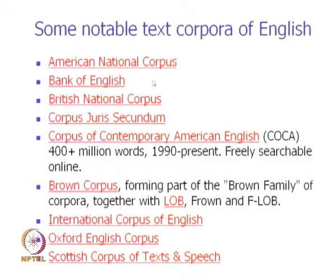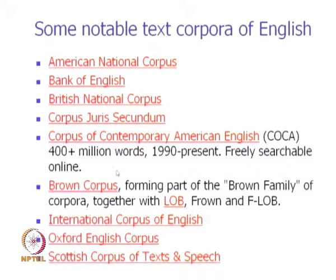A number of documents from the Bank of English are available which are part of speech tagged. The Corpus of Contemporary American English is for modern American prose and is also part of speech tagged — a very large corpus with 400 plus million words from 1990 to present, and it is freely searchable online. The Brown Corpus is very famous because part of speech tagging through machine learning was possible because of it — about 1 million words of English with part of speech tags. Similarly, International Corpus of English, Oxford English Corpus, and Scottish Corpus of Text and Speech are all very valuable data for applying machine learning to NLP.